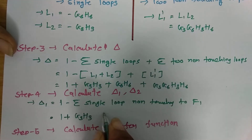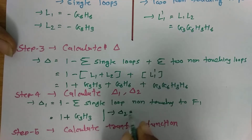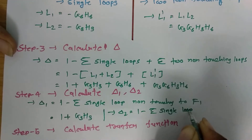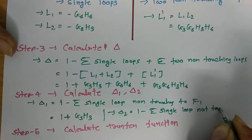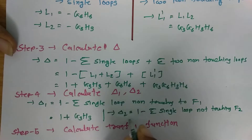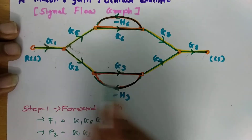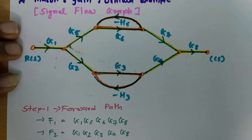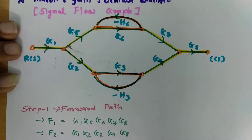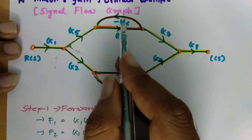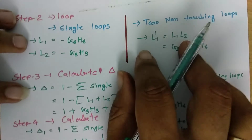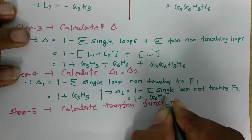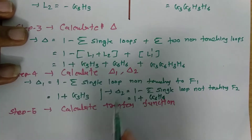For Δ2, we calculate 1 minus the sum of single loops not touching forward path F2. The loop L1 = −G6·H6 is not touching F2. Therefore Δ2 = 1 − (−G6·H6) = 1 + G6·H6.